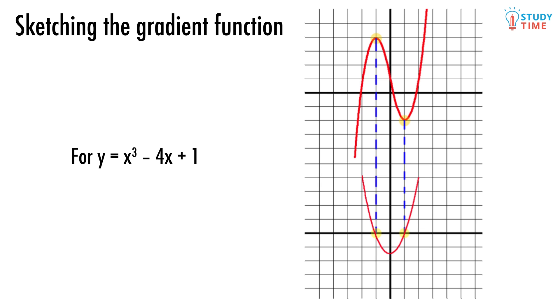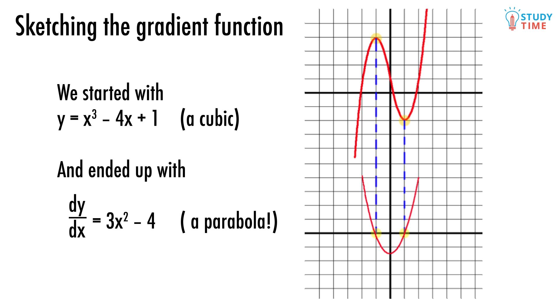Basically, we started with a cubic, and we wound up with a parabola. This especially makes sense if we think about the algebra. We began with y equals x cubed minus 4x plus 1, and we ended up drawing something like dy dx equals 3x squared minus 4.